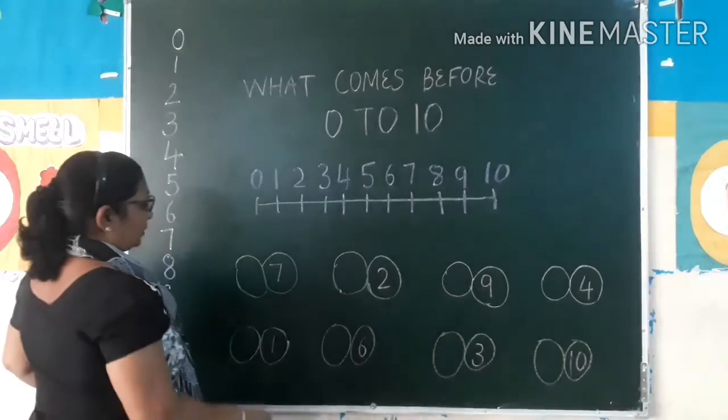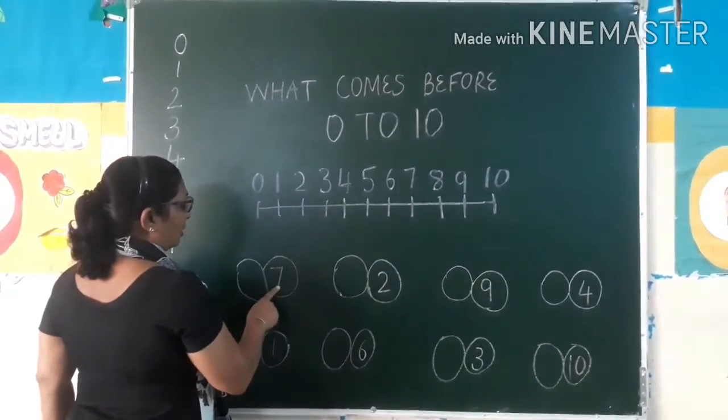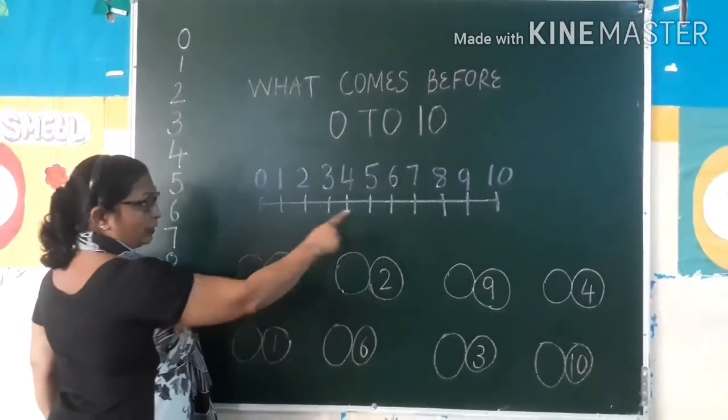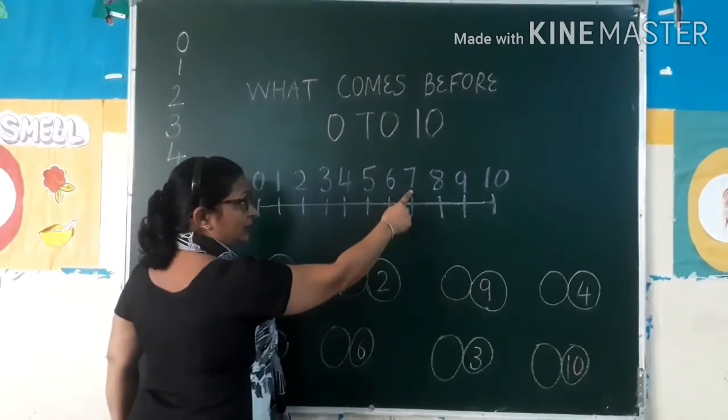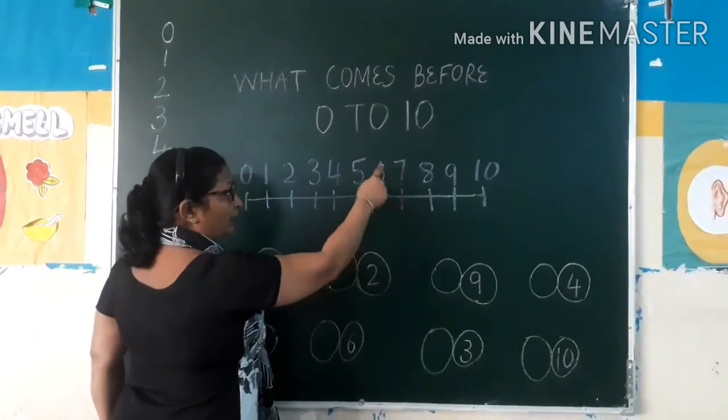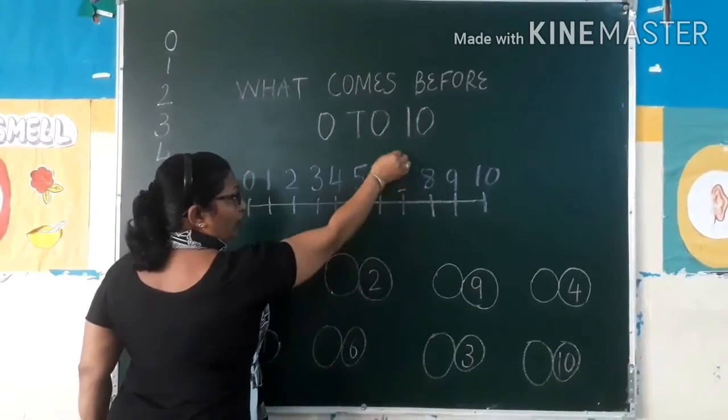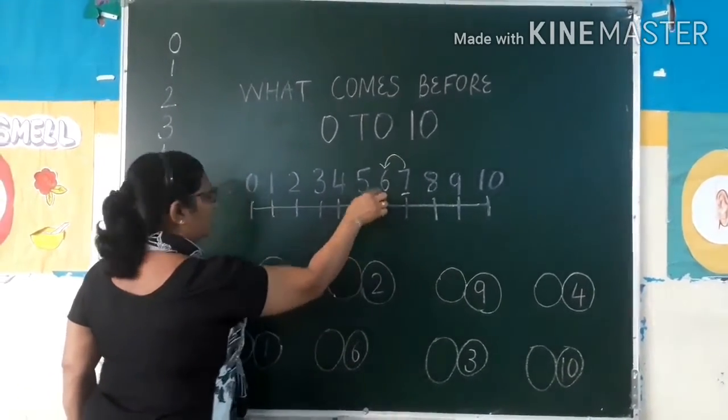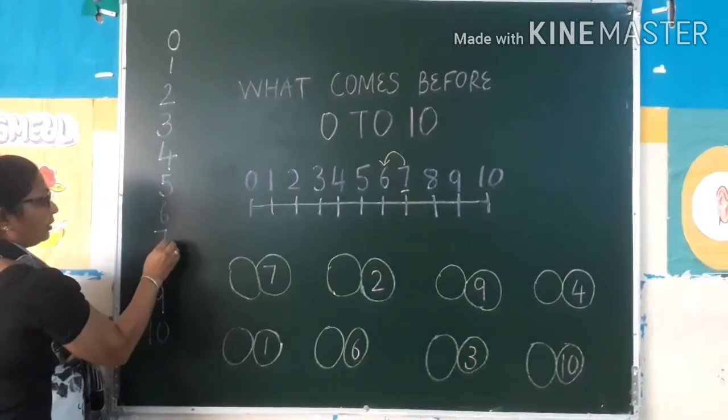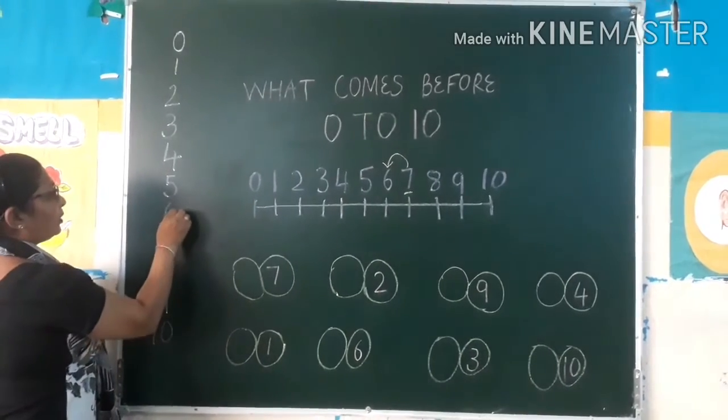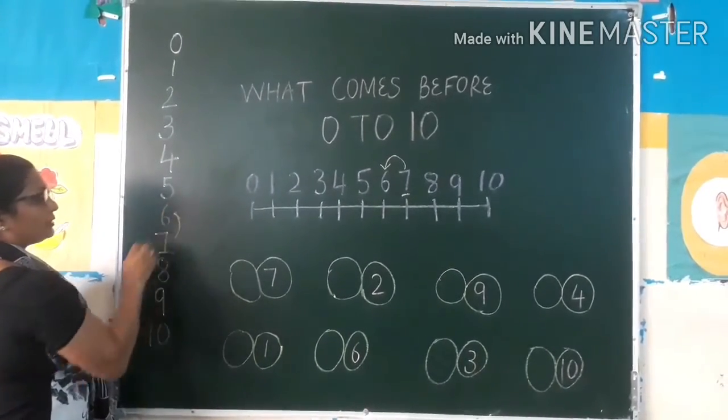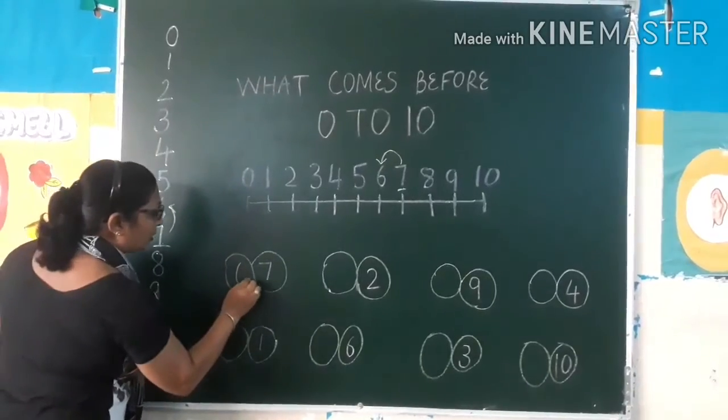Now tell me which number comes before seven. See on the number line, this is our number line and this is the number seven. What is before seven? So seven se before number konsa number hai? Six. So yahan se bhi before seven, seven ke pehle konsa number hai? Before konsa number hai? Six.